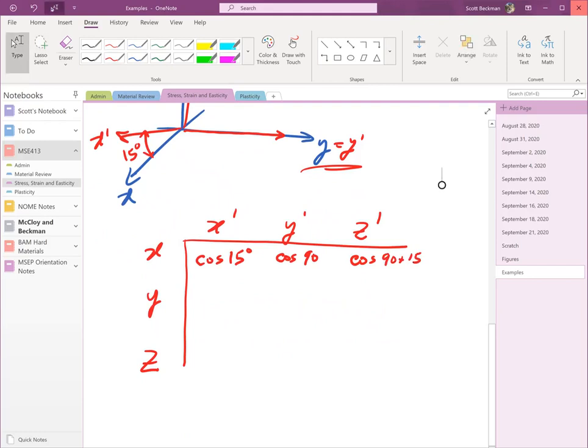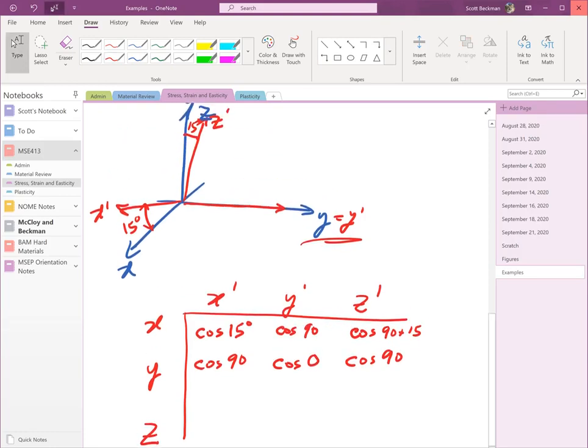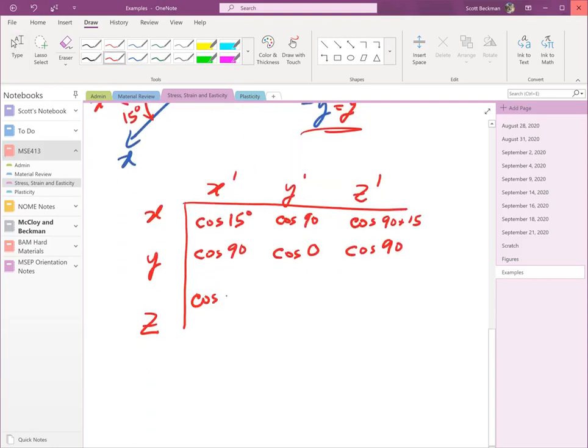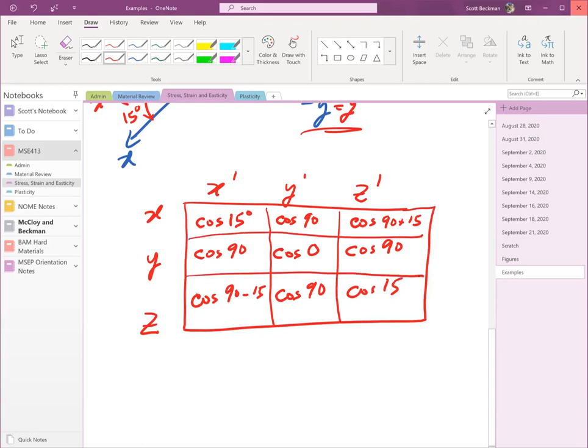Okay, now the y and the x prime, cosine of 90. The y and the y prime, cosine of zero. The y and the z prime, cosine of 90. Okay, the z and the x prime, so that's going to be 90 minus 15. The z and the y prime, which is cosine 90. And then the z and the z prime, cosine 15. And this will be our transformation tensor.